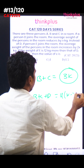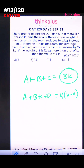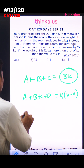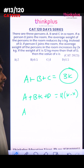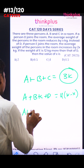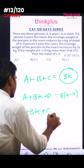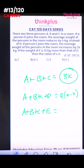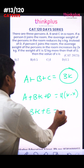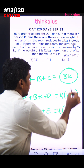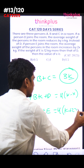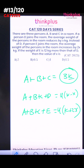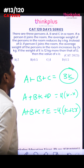Instead of D, if person E joins: A+B+C+E divided by 4, the average increases by 2X. So A+B+C+E = 4(K plus 2X). And if the weight of E is 12 more than D, what is the value of X?